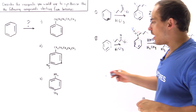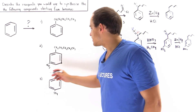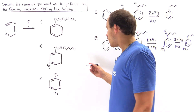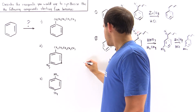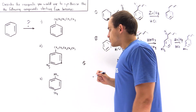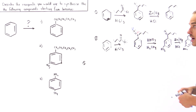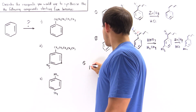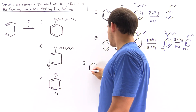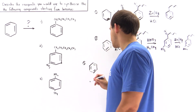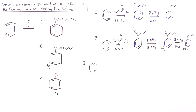Now let's move on to product number three. This synthesis is actually somewhat tricky. We begin with our benzene molecule as the starting material — we cannot begin with anything else. So what exactly should we do in the first step?